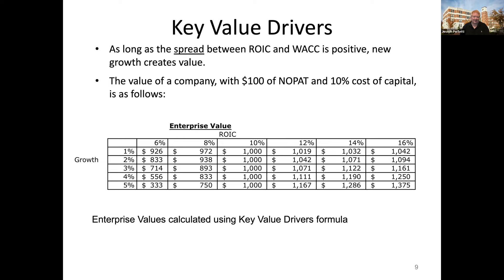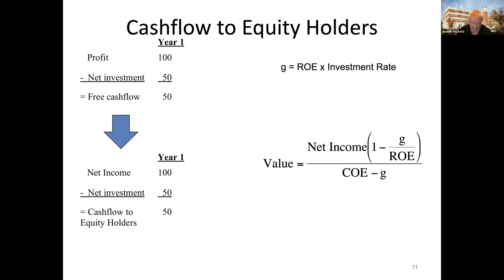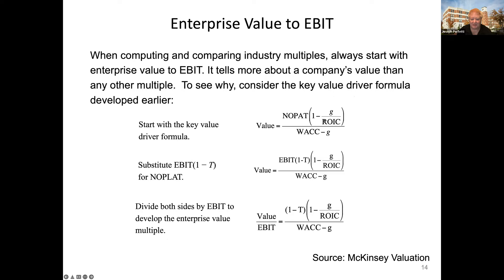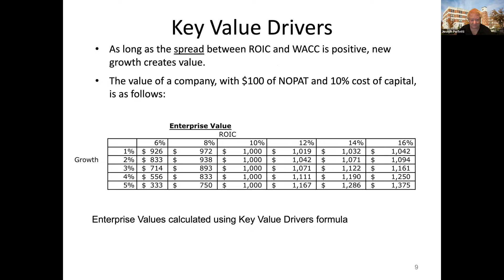Let's talk about what we mean by a multiple, starting with the key value drivers formula. If we take the key value driver formula — which we've been using for continuing value and other things — and plug in some values: $100 million of NOPAT, a 10% WACC, and then various growth rates and ROICs, the table results show the enterprise value outcomes. These are just the results of the key value driver formula across different combinations of G and ROIC.